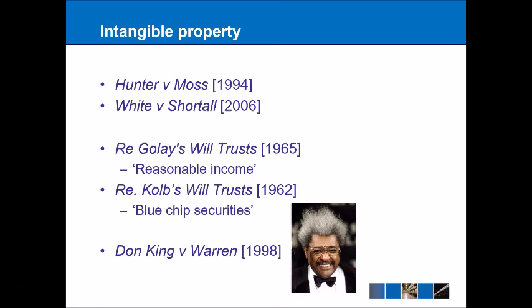The Australian case of White v Shortall 2006 tried to get around this by creating a trust over all of the shares altogether and then dividing them up afterwards, so that the total sum of shares could be seen as property which is separately identifiable. However, this approach isn't necessarily more useful either, and we probably just have to accept that intangible property requires a different rule because of the nature of the property in question.